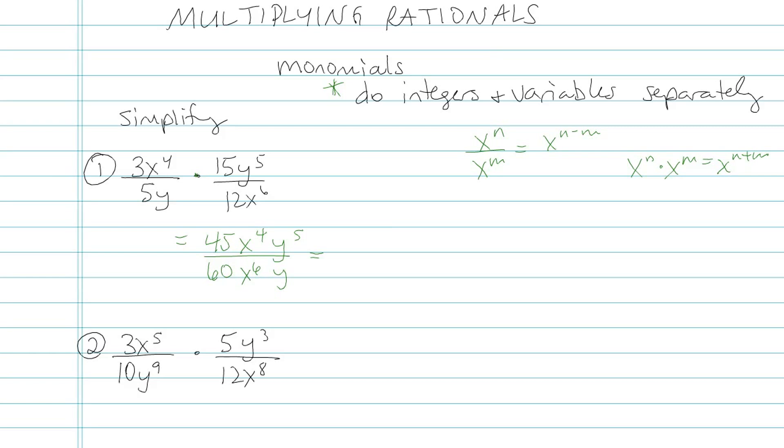45 and 60, the common factor there is 15, so I'll have 3 over 4 for my integers. Then looking at my x's, on top I have x to the fourth, on bottom I have x to the sixth. That's going to give me 2 x's in the bottom. And then for the y's, I have 5 on top and 1 on the bottom. So that's going to be y to the 5 minus 1, which is y to the fourth.